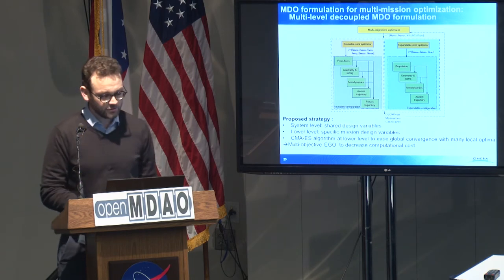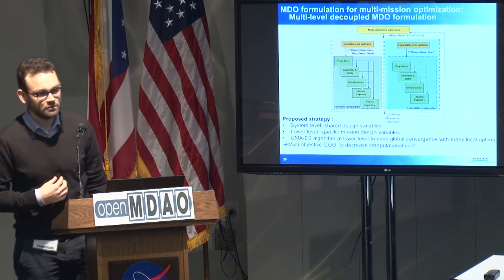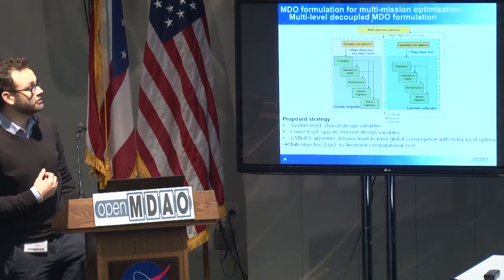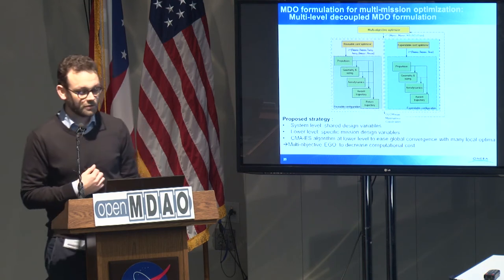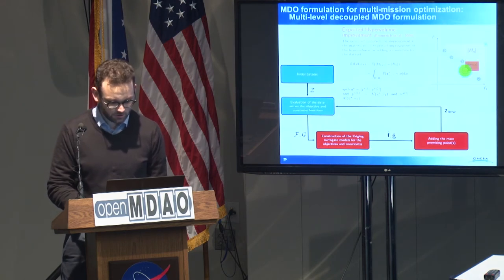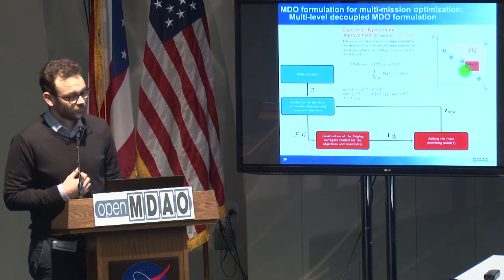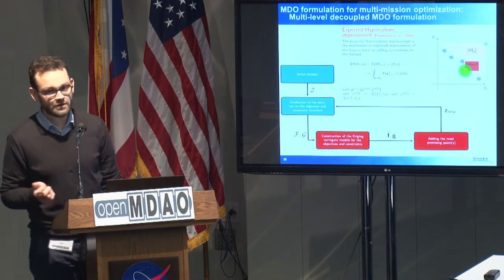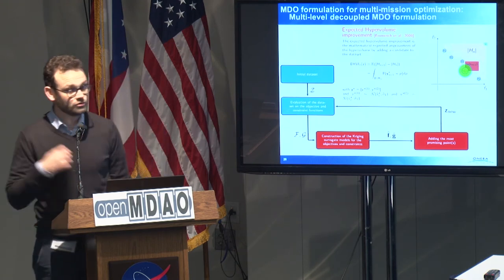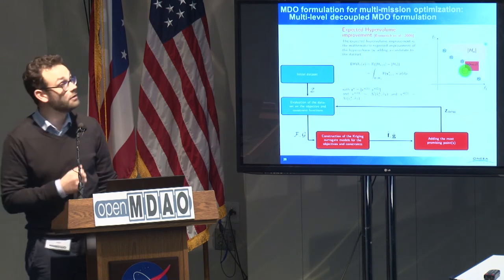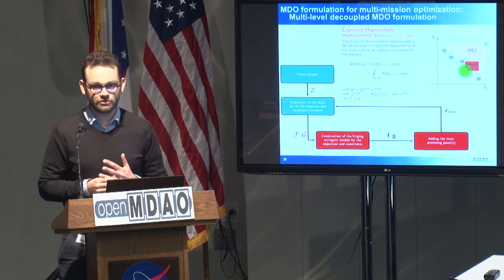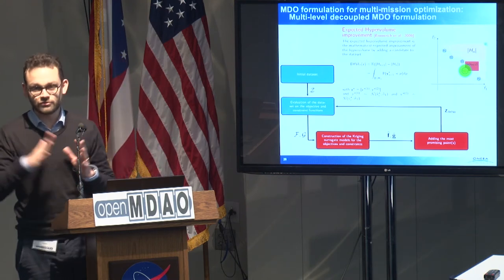In order to facilitate convergence of the optimization process, we propose a multi-level decoupled MDO formulation where each configuration is optimized separately, with a multi-objective optimizer on top to coordinate the two sub-optimizations. Because the subsystem-level optimization is computationally expensive, we choose a derivation of Efficient Global Optimization as the multi-objective optimizer — surrogate-based optimization. Joseph already presented EGO. For the multi-objective EGO, we replace the classical expected improvement criterion used to add new points to the design of experiment with a multi-objective version using expected hypervolume improvement. Basically, the point added to the current DOE is the one that best improves the Pareto front between the different objectives.